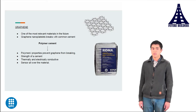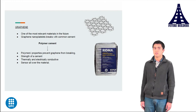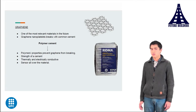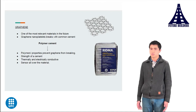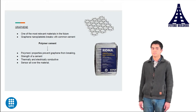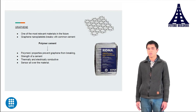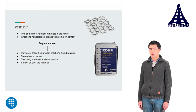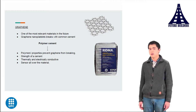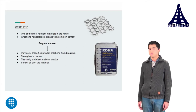The last one is graphene, which will without doubt be one of the most important materials in the future. However, if we add graphene or graphene nanoplatelets to common cement such as Portland cement, graphene breaks. That's why we should look for a different kind of cement — polymer cement — because the polymer's properties prevent graphene from breaking. Cement with graphene is stronger and also becomes thermally and electrically conductive, meaning it can act as a sensor by itself.